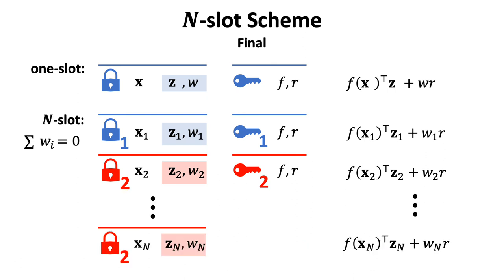In the general n-slot case, we have n subciphertexts. Subciphertext 1 encrypts the first slot using the first copy of the one-slot scheme, while all remaining slots are handled using the second copy. The secret key will always have two subkeys from the two copies respectively.